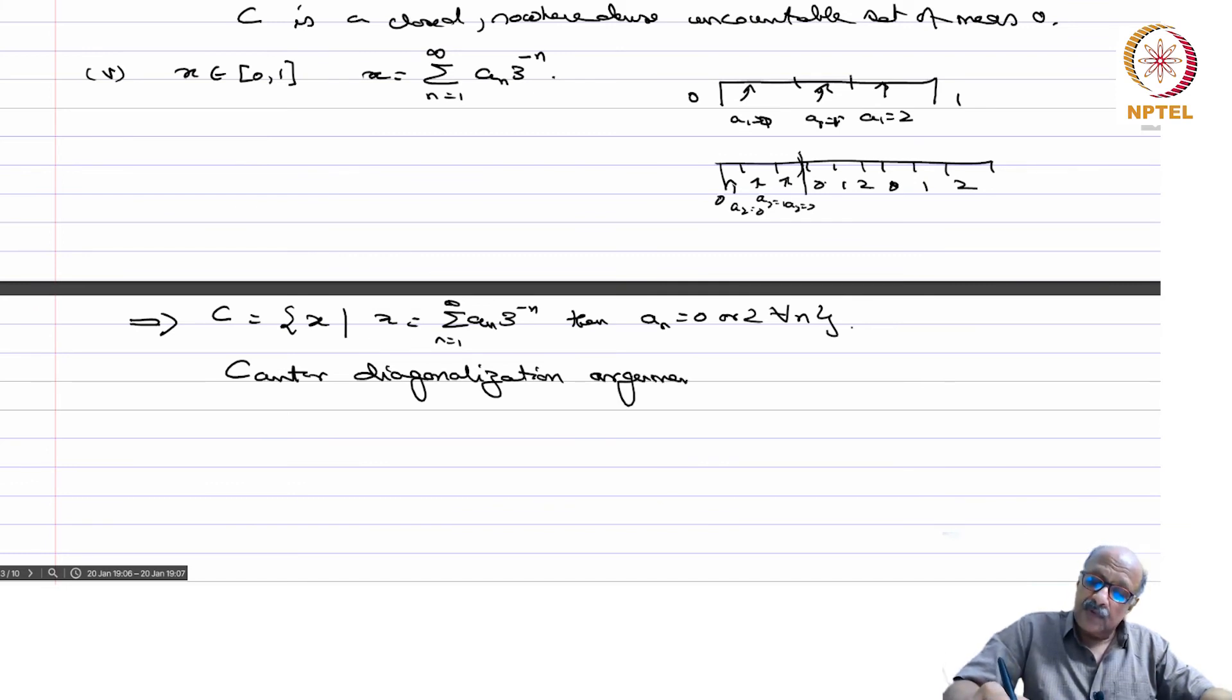How did you prove that [0,1] is uncountable? You do the same thing, you take the binary expansion there, and then you have only 0 or 1 as the two possibilities. So if it is 0 you put 1 in that place, if it is 1 you put 0 in that place. You create a new number which is different from all the previous numbers, and therefore you cannot exhaust by numbering them in a countable way. That is the same argument here, instead of 0 and 1 you have 0 and 2, and therefore Cantor's argument implies C is uncountable.